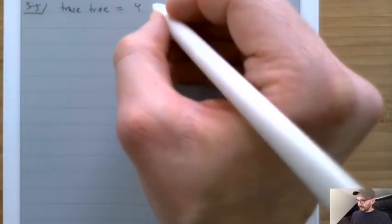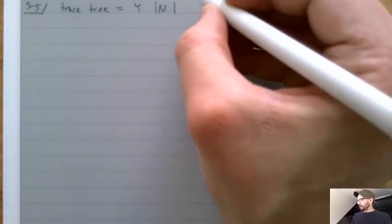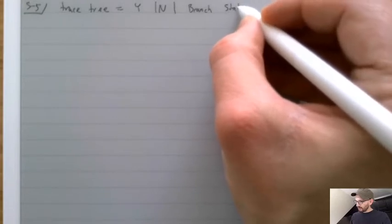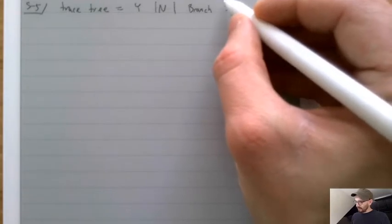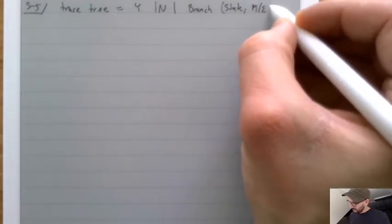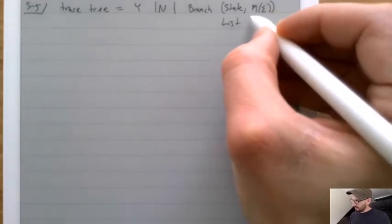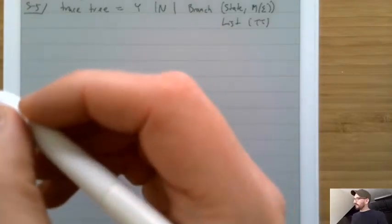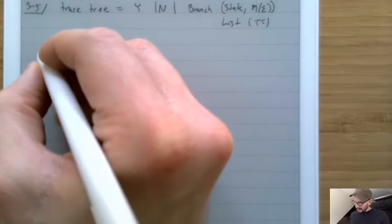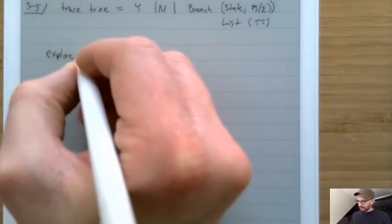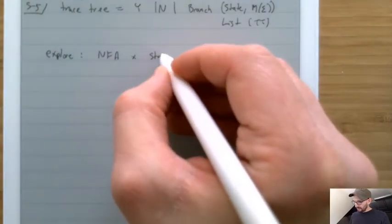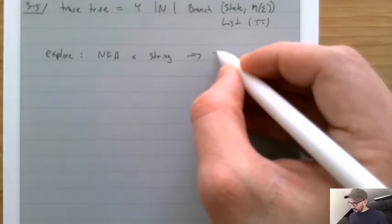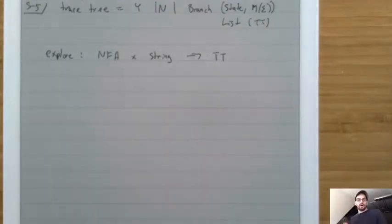A trace tree either says yes or no, or it's a branch with the state at the top of the branch and a list of more trace trees. We could write a function called Explore that takes an NFA and a string and returns a trace tree showing all the different possibilities that machine could execute.